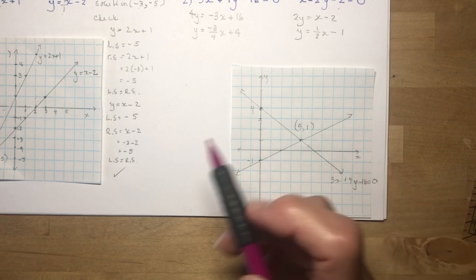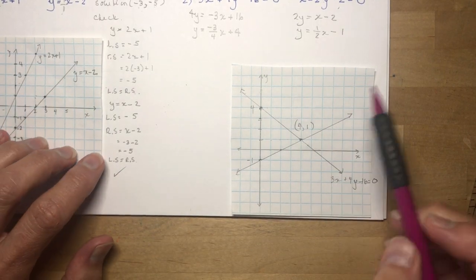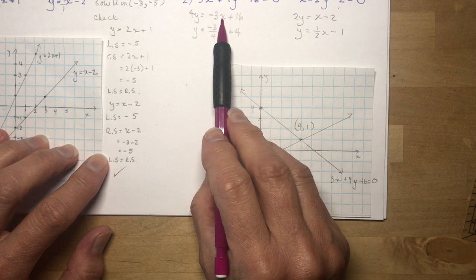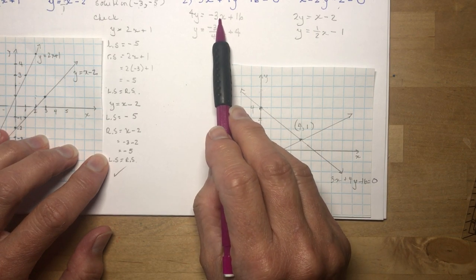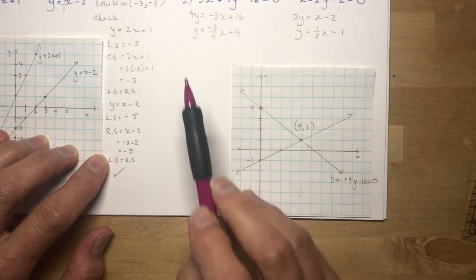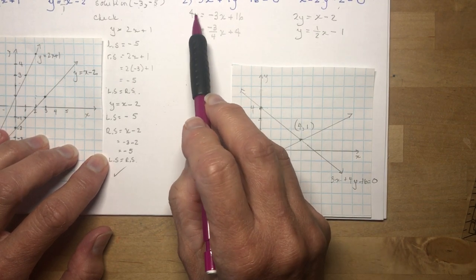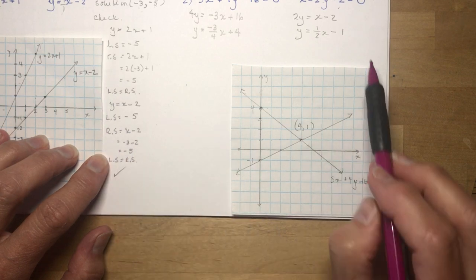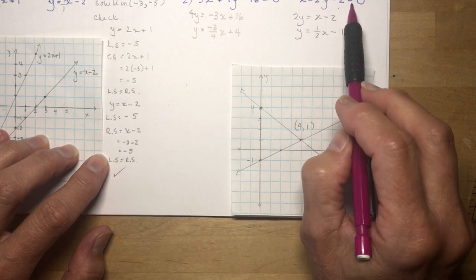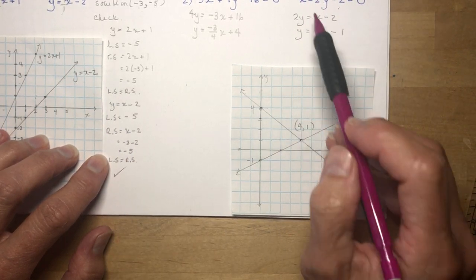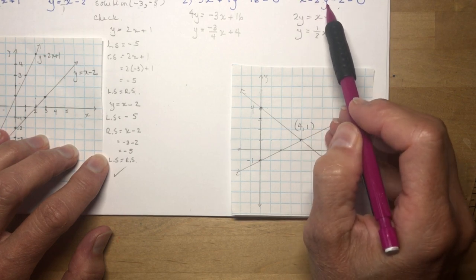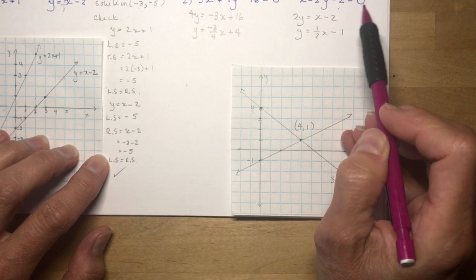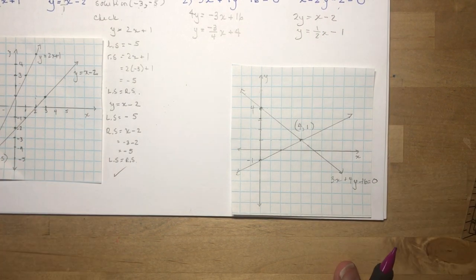I'm not going to do the full check here since there's not a lot of room. But if you plug in x = 4 into the first equation: −3(4) + 16 = −12 + 16 = 4, and 4y = 4 means y = 1. That works. Or plug into the original second equation: 4 − 2(1) − 2 = 0. You can check that solution as well.